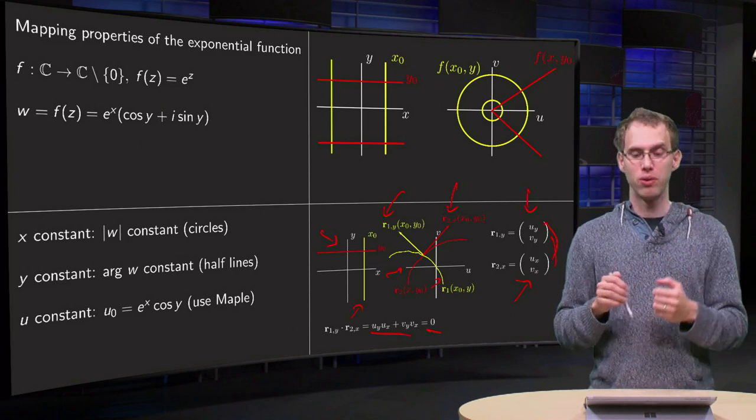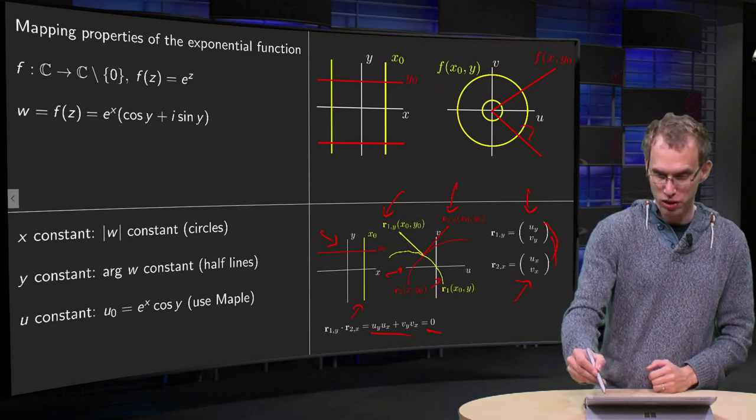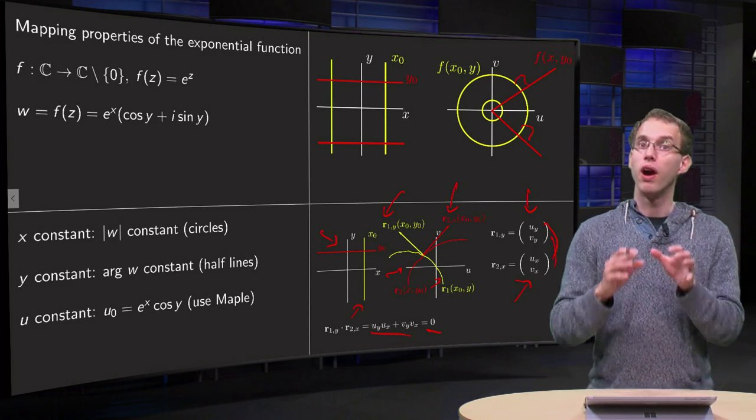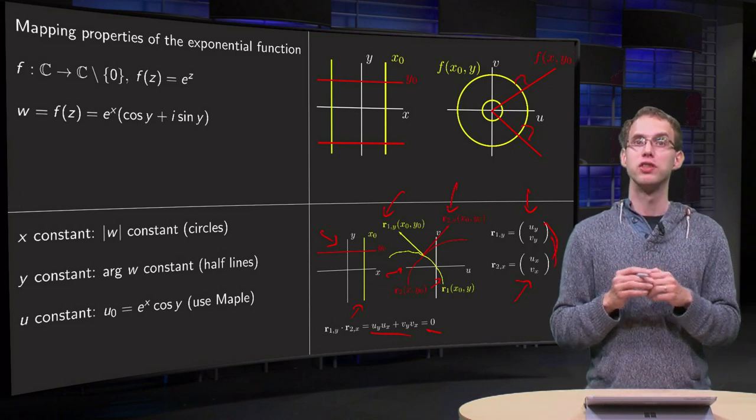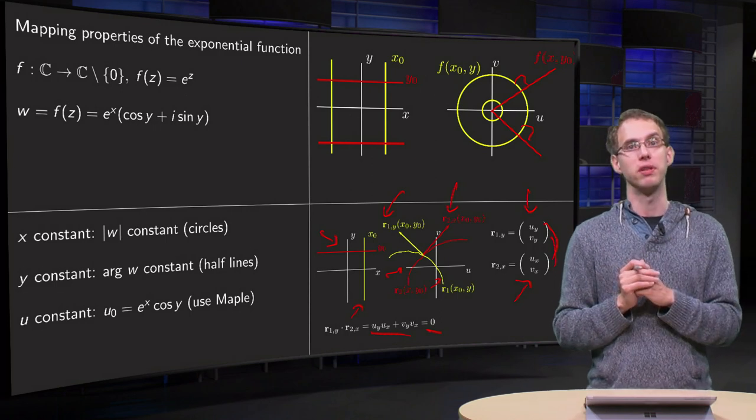So that is why you always get those orthogonal intersections. You have that for the level curves of all your analytic functions, and that is due to Cauchy-Riemann equations.